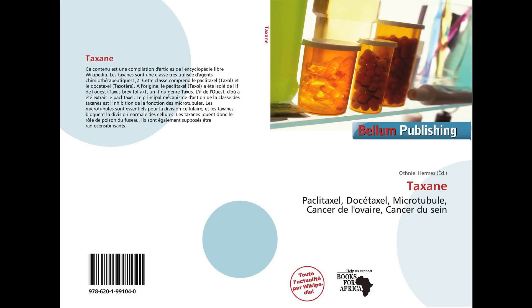This synthetic route to taxol is one of several; other groups have presented their own solutions, notably the group of Holton with a linear synthesis starting from borneol, the Danishefsky group starting from the Wieland-Miescher ketone, and the Wender group from pinene. The Nicolau synthesis is a good example of convergent synthesis because the molecule is assembled from three pre-assembled synthons. Two major parts are cyclohexene rings A and C, connected by two short bridges creating an eight-membered ring in the middle — ring B. The third pre-assembled part is an amide tail.